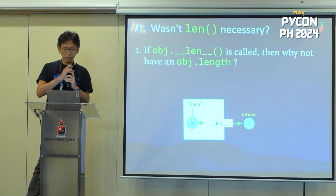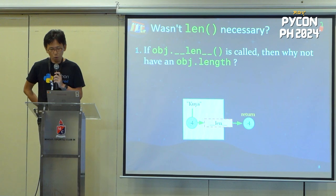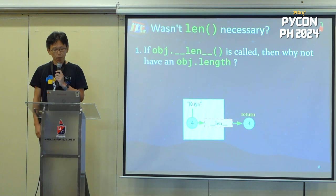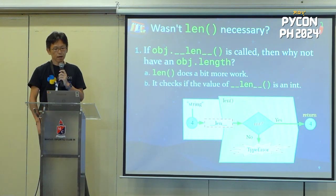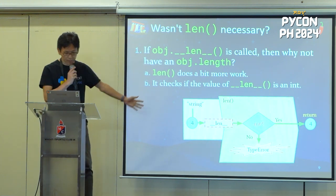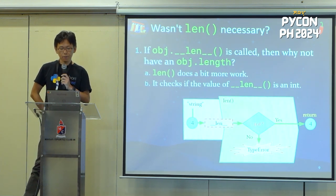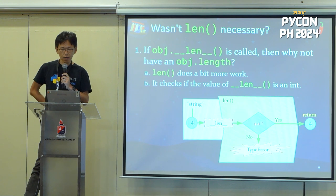Why is the len function necessary? If the `__len__` method exists, why not just use that? In Java or JavaScript, we can get the length using `.len` or `.length` property attribute. Why does Python use the dunder method? Actually, the len function does a bit more. In this green part on the right bottom side, it checks if the value returned by the string object is an int type. If it's not an int type, it throws a TypeError exception. This is how the len function guarantees an int is returned.